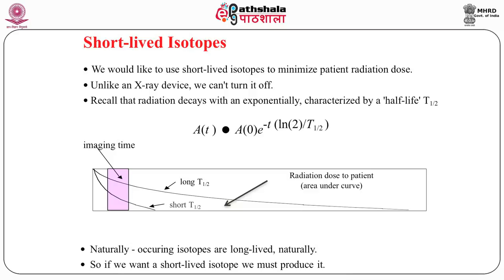Naturally occurring isotopes which are good cannot simply be used, because having a half-life of 10 to the power 5 years gives you nothing useful — your scan is done, the information is there, but the isotope remains in the body giving a dose. So we always look for short-lived isotopes. Now, how are these isotopes produced? What is the mechanism? That is what we are going to discuss in this presentation.